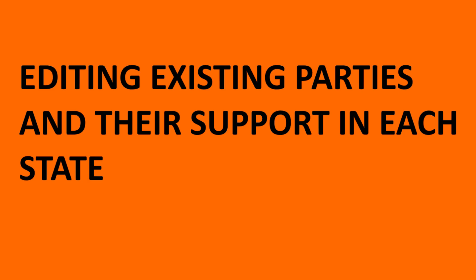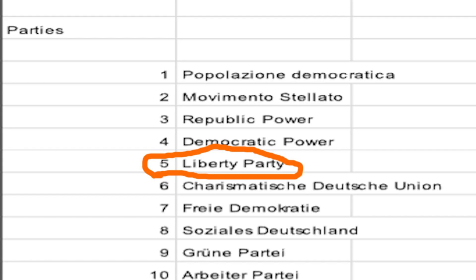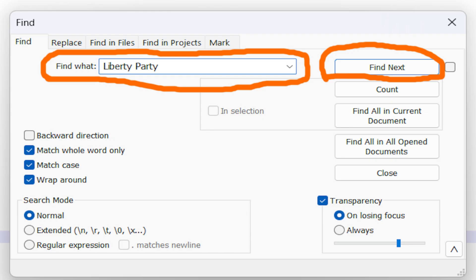Next I'm going to teach you how to edit existing parties and things such as ideology, party name and color, and amount of votes they get in each state. Find the party you want to change — in this case I will be changing the Liberty Party.